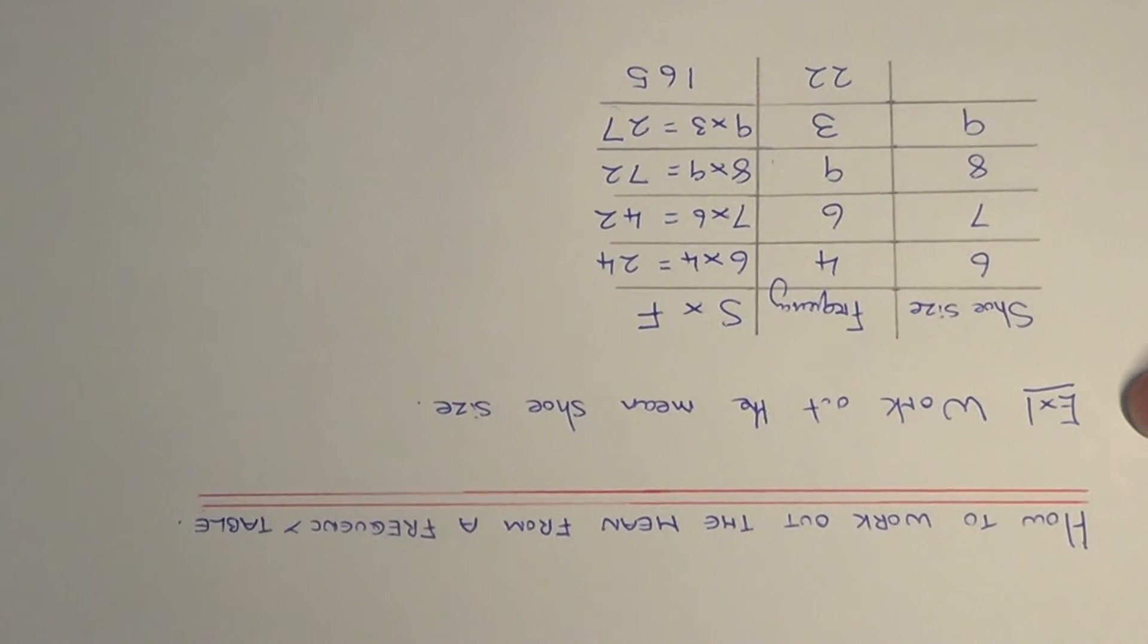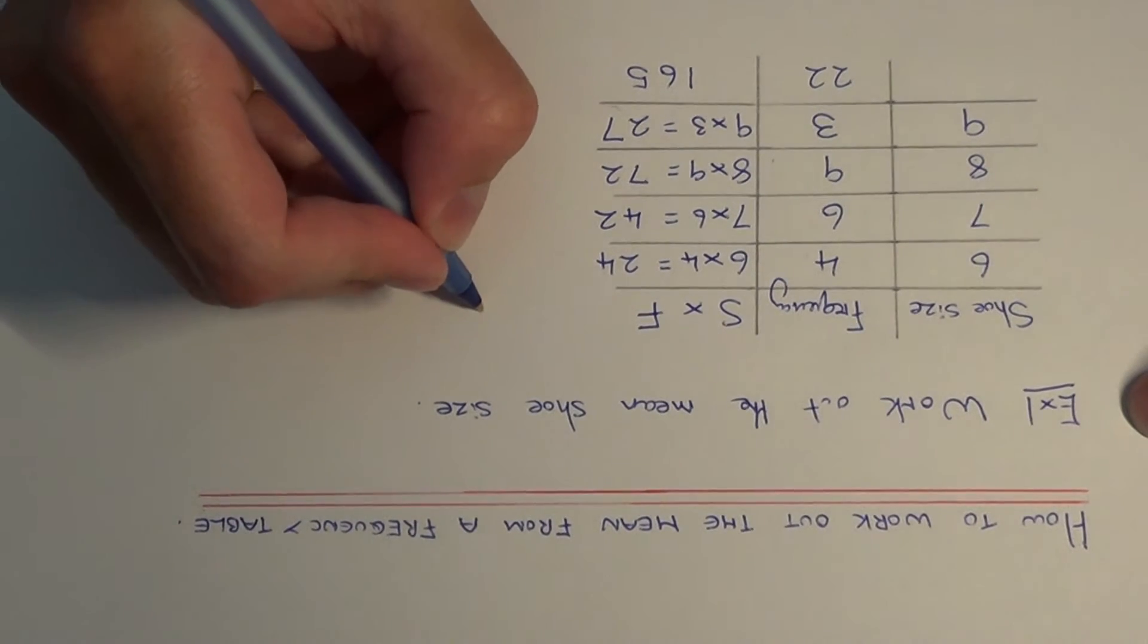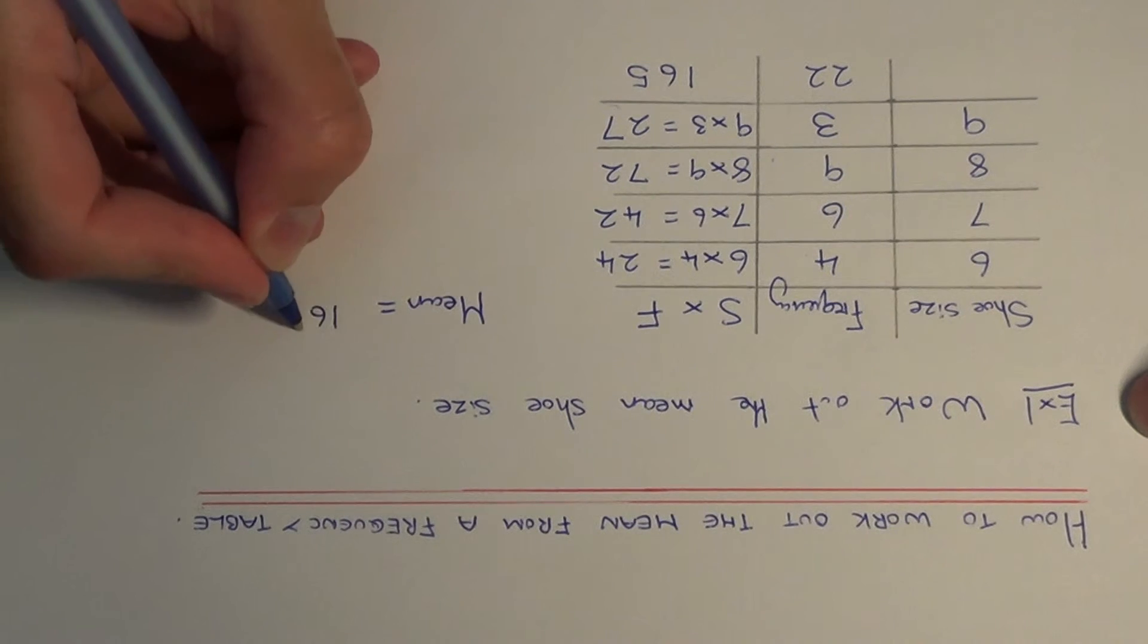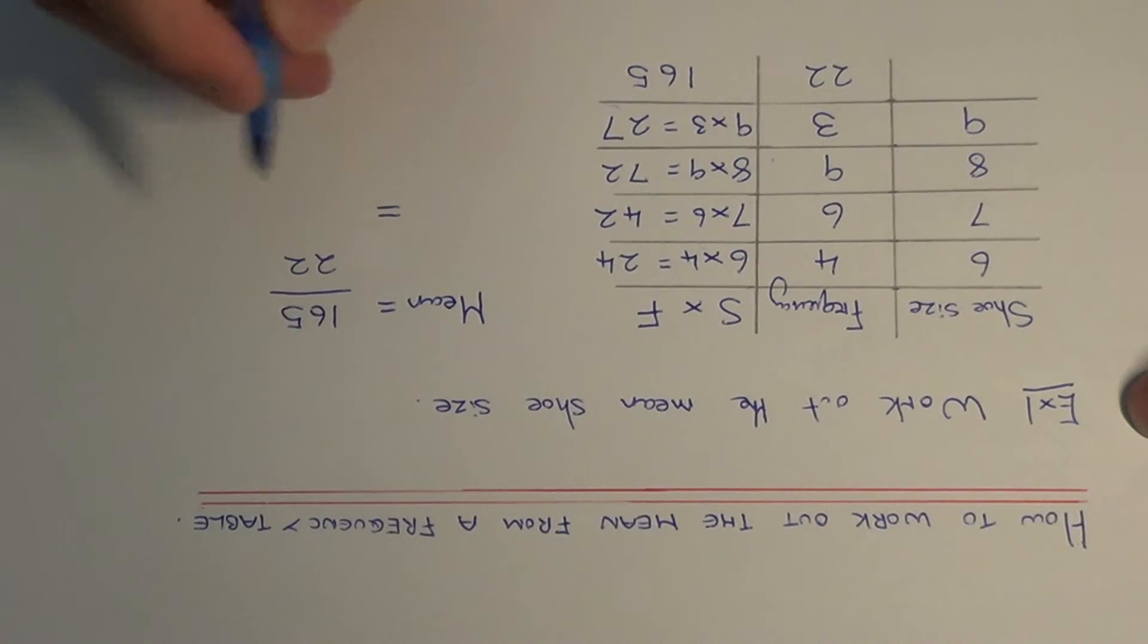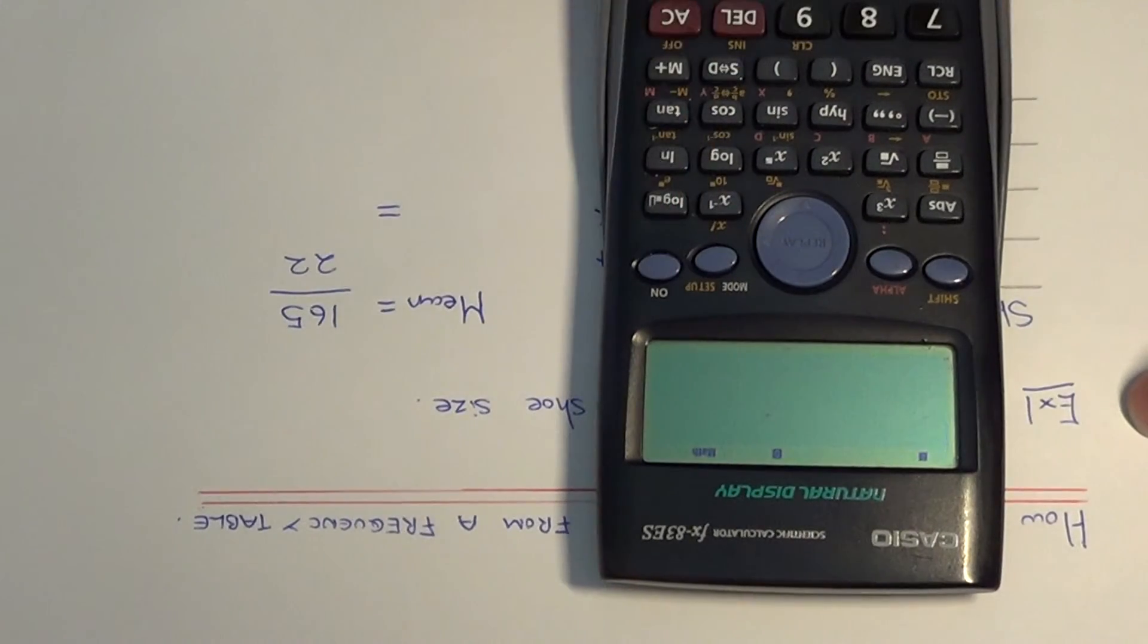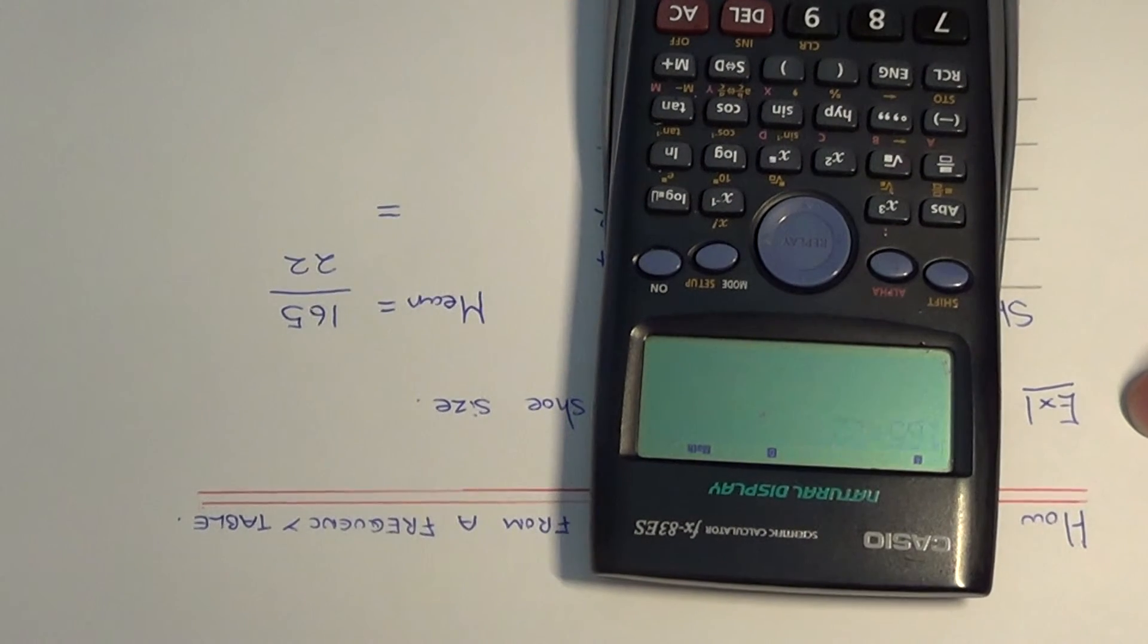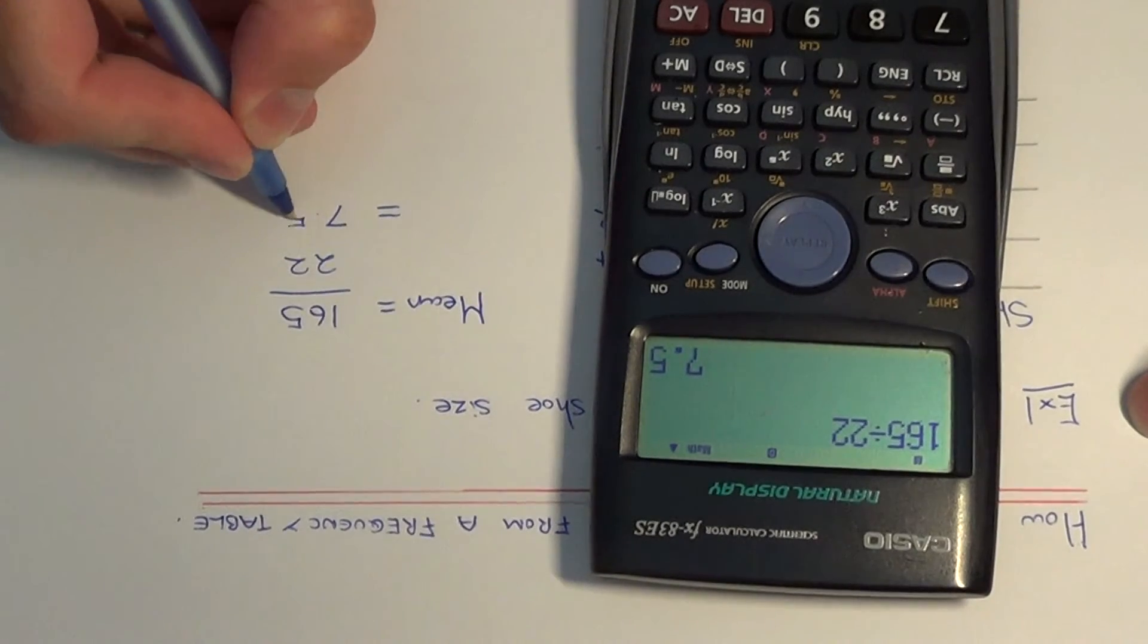And our final step then is to divide the total of all the shoe sizes by the total frequency, and that will give us the mean. So we do 165 divided by 22. So if we put this on our calculator, this gives us an answer of 7.5.